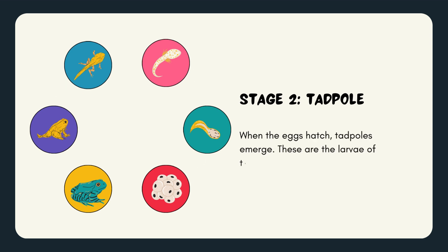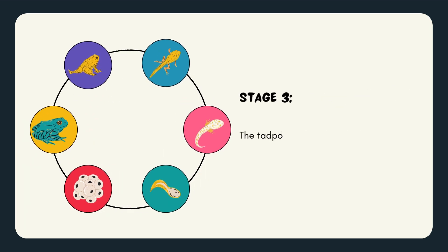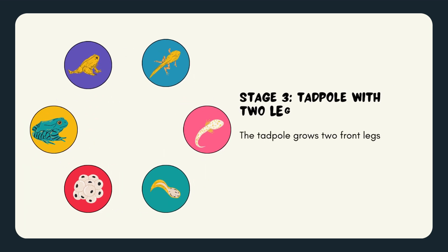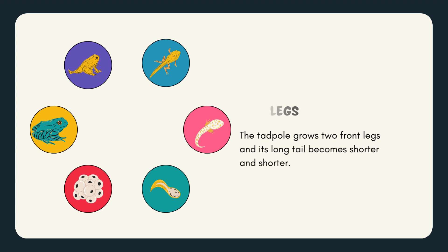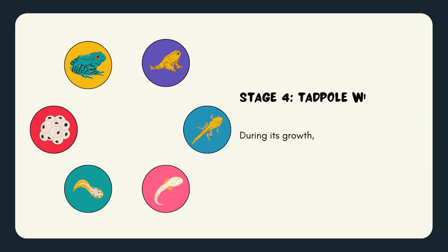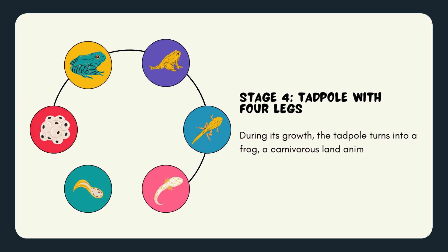Stage 3: the tadpole grows two front legs and its tail becomes shorter and shorter. Stage 4: during its growth, the tadpole turns into a frog — a carnivorous land animal moving with four legs and breathing with lungs.